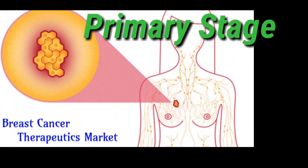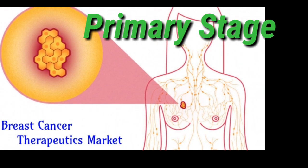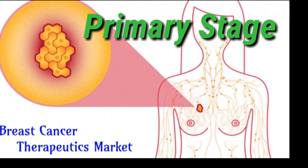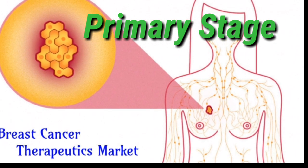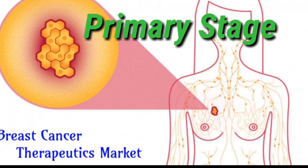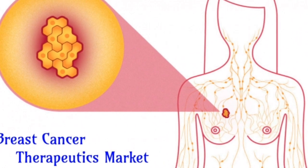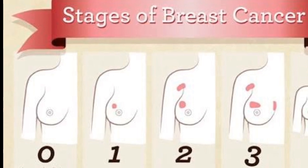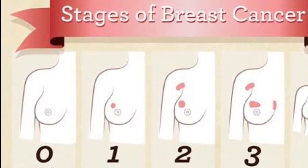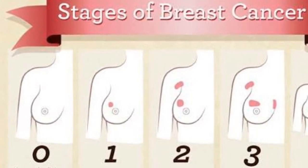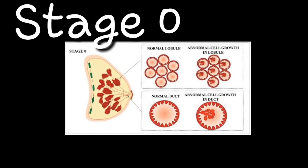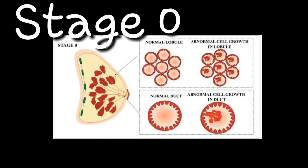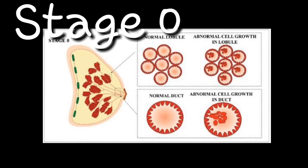The primary stage is divided into 4 parts: stage 0, stage 1, stage 2, and stage 3. In this stage, the cancer cells are still in the place where they started and have not spread at all.